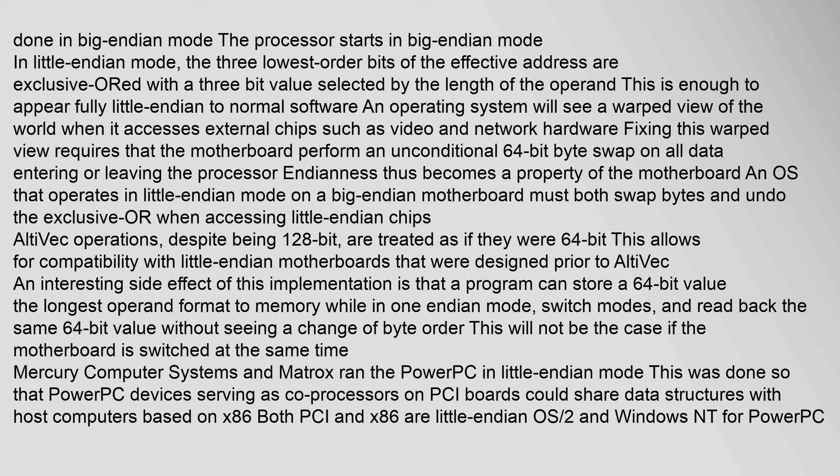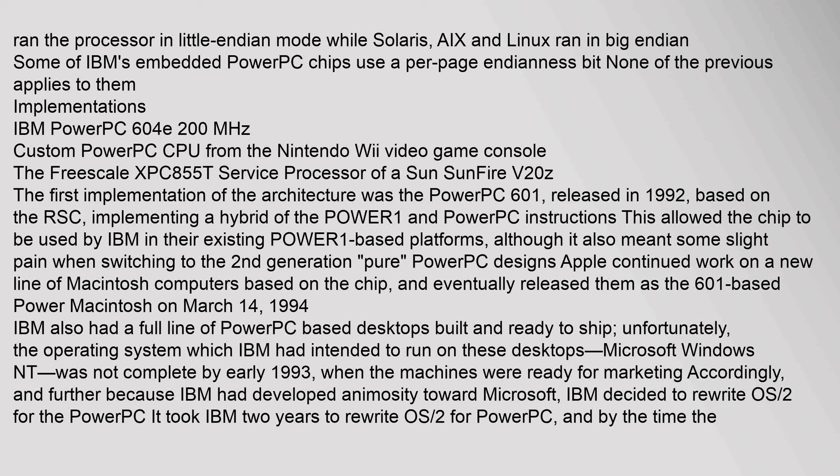An operating system will see a warped view of the world when it accesses external chips such as video and network hardware. Fixing this warped view requires that the motherboard perform an unconditional 64-bit byte swap on all data entering or leaving the processor. Endianness thus becomes a property of the motherboard. An OS operating in Little Endian mode on a Big Endian motherboard must both swap bytes and undo the exclusive-OR when accessing Little Endian chips. AltiVec operations, despite being 128-bit, are treated as if they were 64-bit to allow compatibility with Little Endian motherboards designed prior to AltiVec. Mercury Computer Systems and Matrox ran the PowerPC in Little Endian mode so that PowerPC devices serving as co-processors on PCI boards could share data structures with x86 host computers. OS/2 and Windows NT for PowerPC ran the processor in Little Endian mode, while Solaris, AIX, and Linux ran in Big Endian.